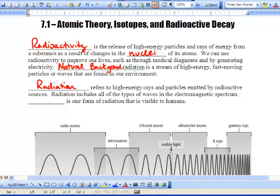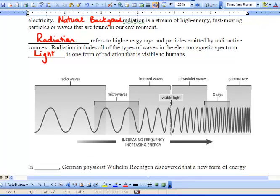Radiation refers to high-energy rays and particles emitted by radioactive sources. Radiation includes all types of waves in the electromagnetic spectrum. Light is the only form of radiation that we can actually see. If we look at this spectrum here, this is the only wavelength that we can actually see, which is pretty crazy. There's all this other radiation around us that we can't see, but it's there.